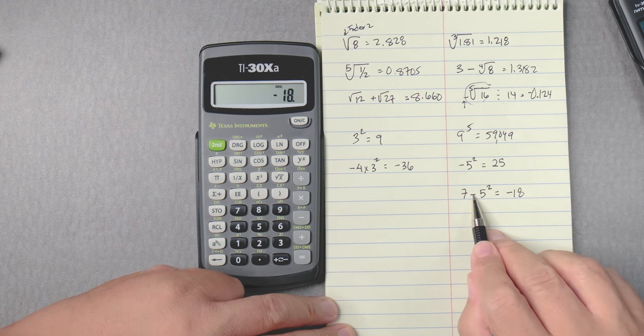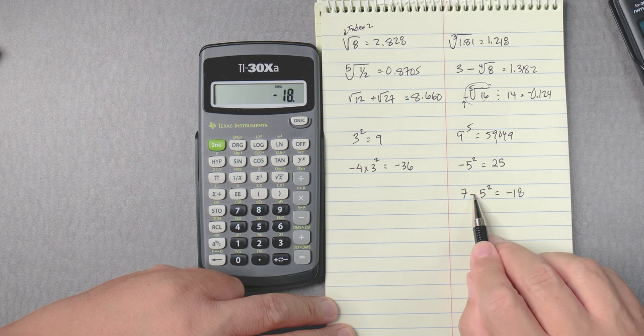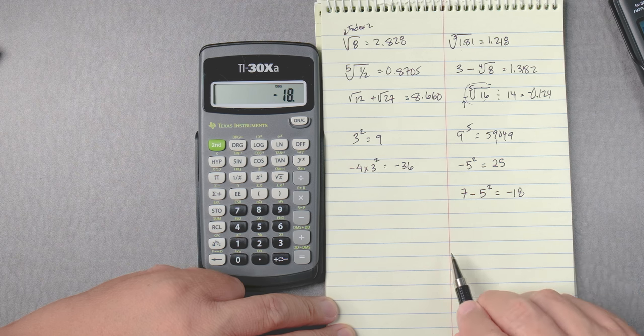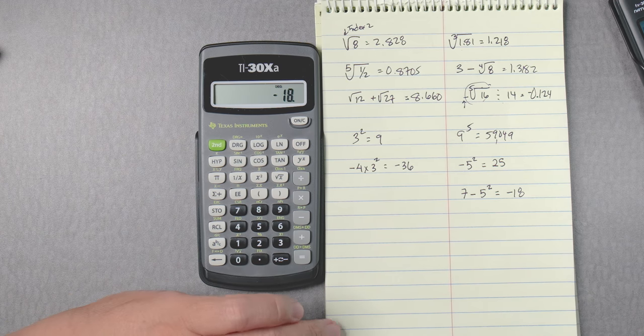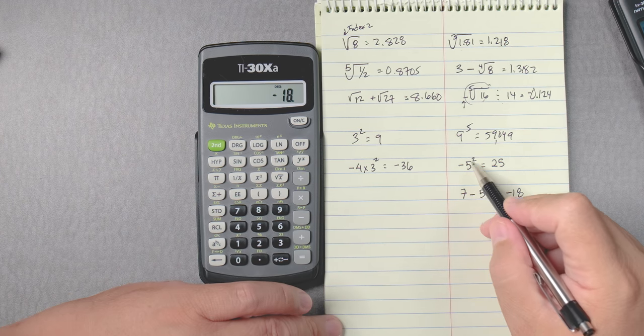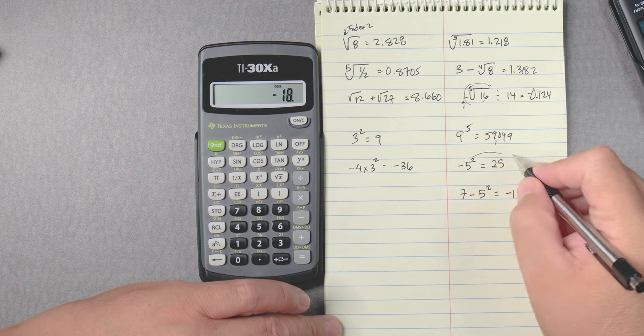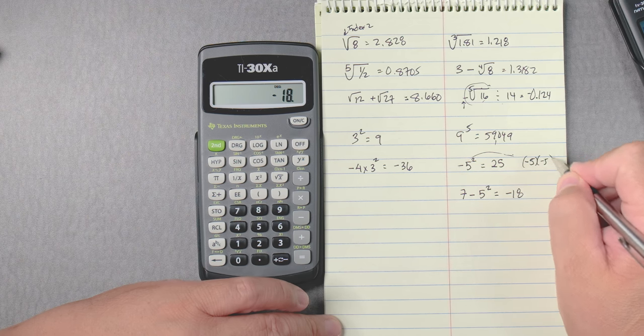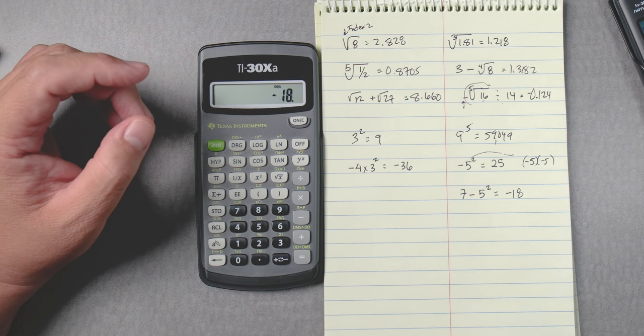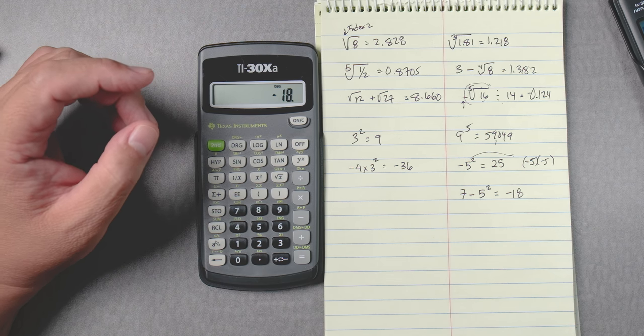So this subtraction 5 squared, this is not a negative 5 squared. This calculator will make a negative 5 squared almost as if it was negative 5 times negative 5 on this calculator. You got to be aware of that.